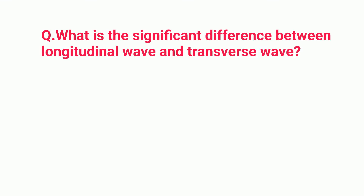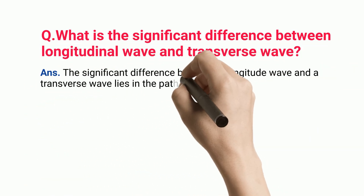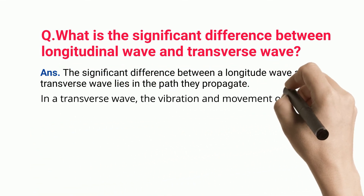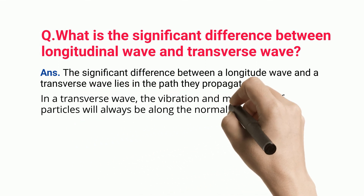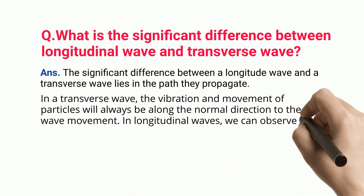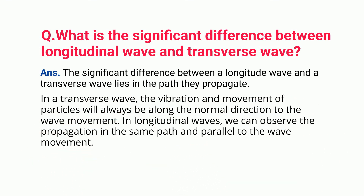What is the significant difference between a longitudinal wave and a transverse wave? The significant difference lies in the path they propagate. In a transverse wave, the vibration and movement of particles will always be along the normal direction to the wave movement. In longitudinal waves, we can observe the propagation in the same path and parallel to the wave movement.